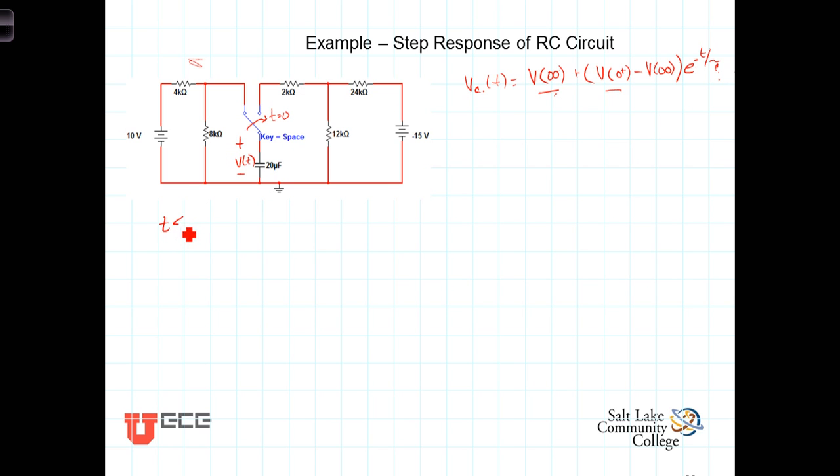So for T less than zero, and when you're doing these kinds of circuits, analyzing these types of circuits, at least initially it does pay to redraw the circuit. So for T less than zero, we've got the 10 volt source here. We have a 4 kiloohm resistor, 4 kiloohm resistor. We have an 8 kiloohm resistor. And we have the capacitor. And it's a 20 microfarad capacitor. 10 volts.